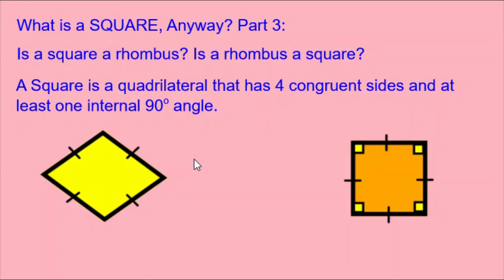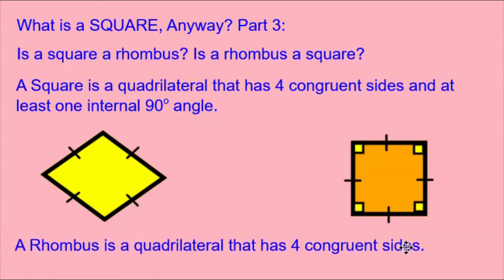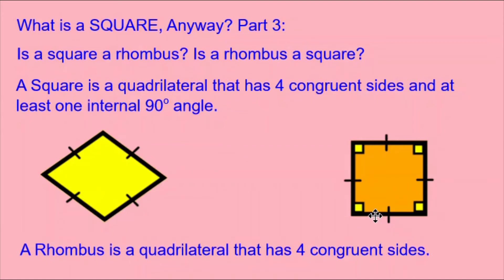Let's look at the definition of a square. A square is a quadrilateral that has four congruent sides and at least one internal 90-degree angle. We can see the orange square is following those rules. But the yellow rhombus has the four congruent sides without even one internal 90-degree angle. The definition of a rhombus is: a quadrilateral that has four congruent sides. Our yellow rhombus follows that rule, and so does our orange square. So a square is also a rhombus, but a rhombus is not necessarily a square — it will only be a square if it happens to have the internal 90-degree angles.